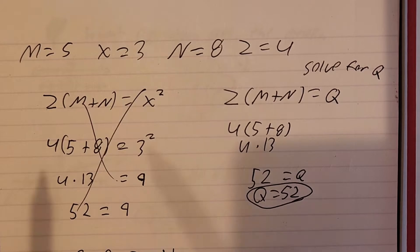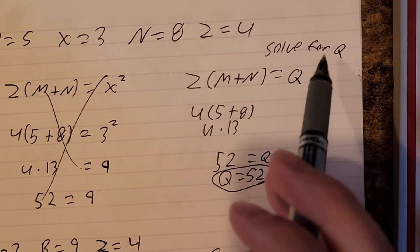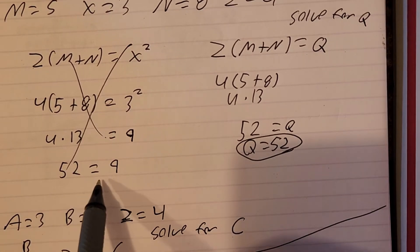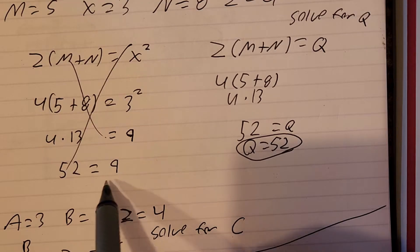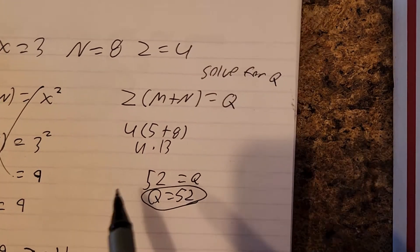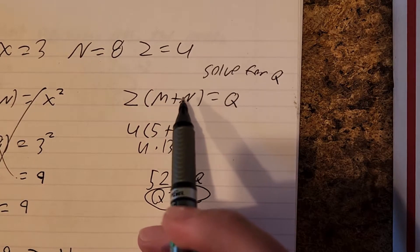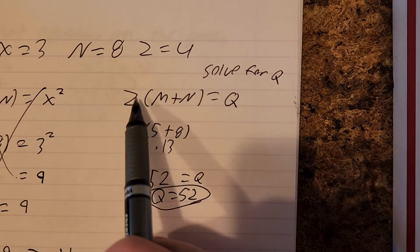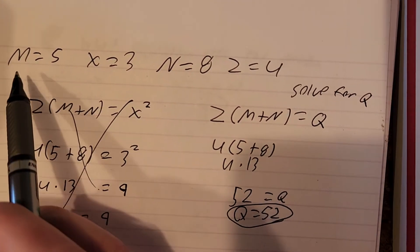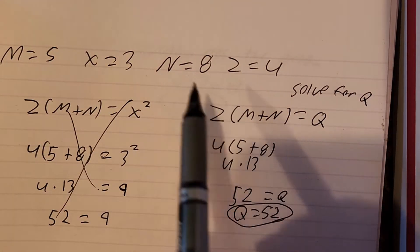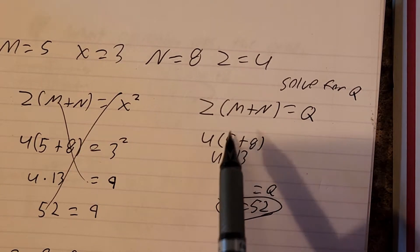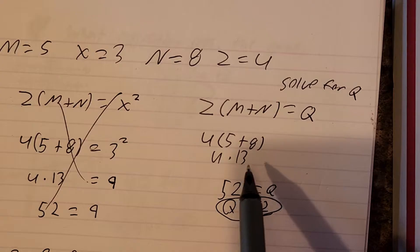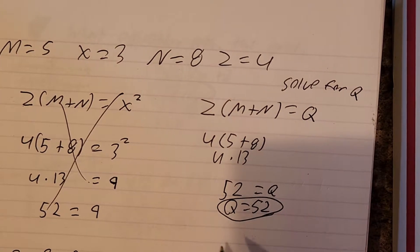Next section: you'll have a variable that has a number that goes with it — like a letter that equals a number. So it says solve for Q. Z times parentheses M plus N equals Q. We know Z equals 4, M equals 5, and N equals 8. So let's just switch everything: 4 times parentheses 5 plus 8. You get 13 inside, then 4 times 13 equals 52. So Q equals 52.